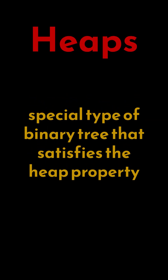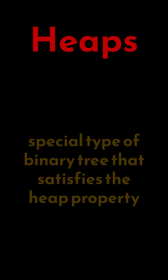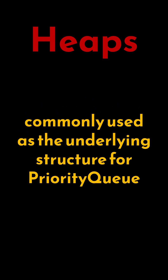A heap is essentially a special type of binary tree that satisfies the heap property. In Java, heaps are commonly used as the underlying structure for priority queues, making them highly efficient for managing elements based on priority.